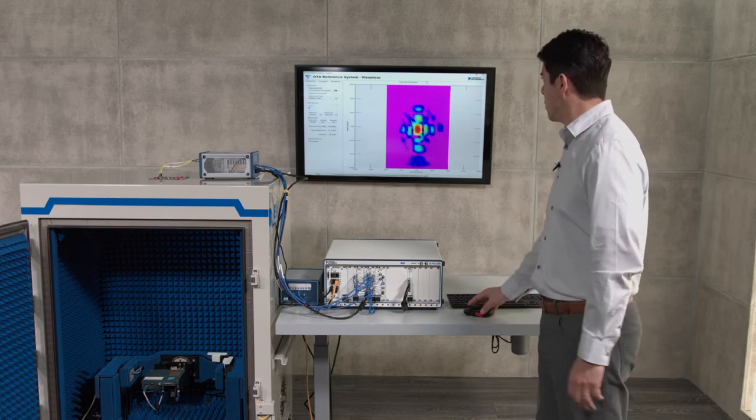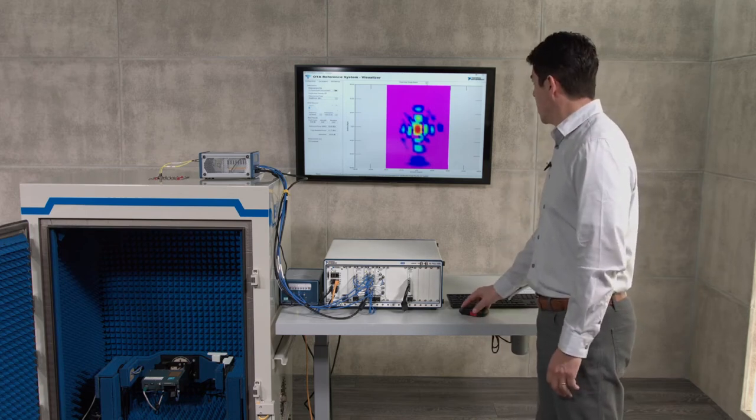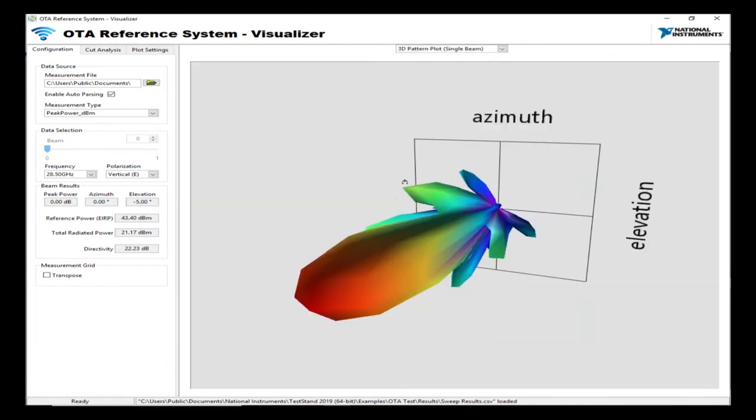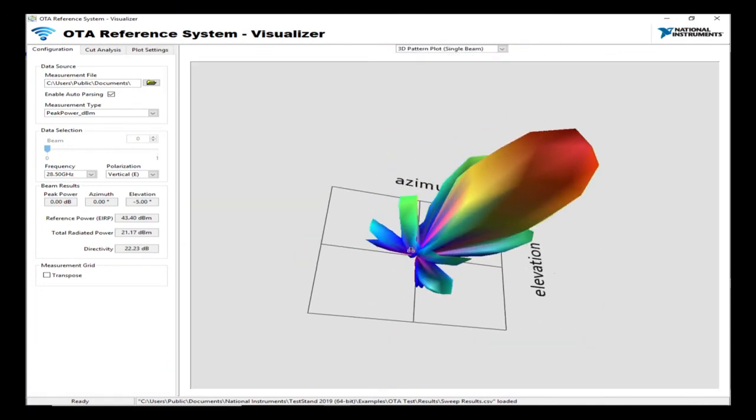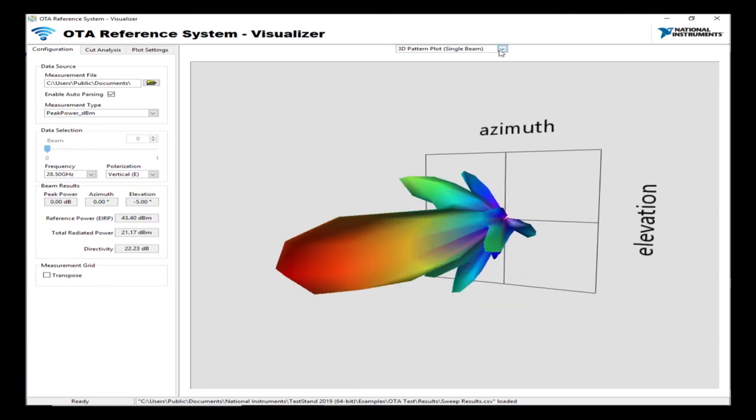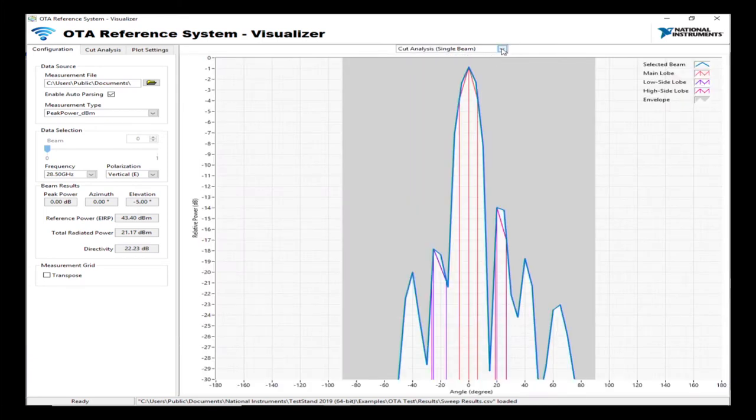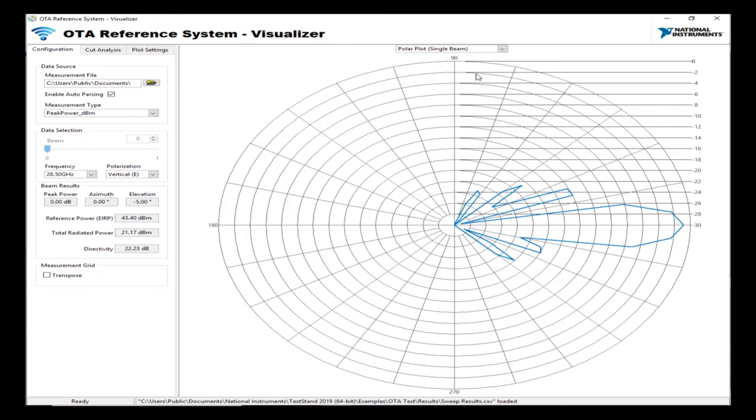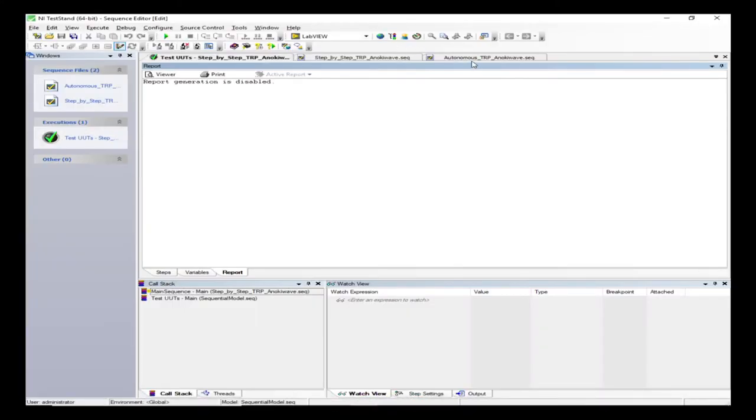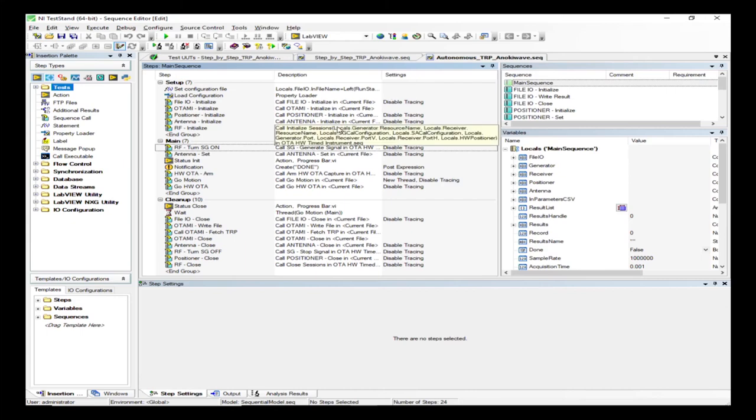And we can see here some of those visualizations, like the flat heat map. We can look at the 3D pattern plot and look at the characteristics of the beam, or look at the H and V cut analysis or even polar plots. Now let me switch over to a faster way of running these tests.